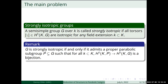A group is strongly isotropic if it does not admit any anisotropic torsors — all torsors admit reduction of structure to some proper parabolic subgroup. One important remark: G is strongly isotropic if and only if it admits a proper parabolic subgroup such that the induced map on Galois cohomology is a bijection for all field extensions. This is shown using results of Zinoviev on versal torsors — you choose some parabolic to which the versal torsor admits reduction of structure, and that gives you the map.